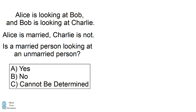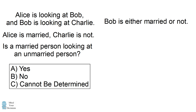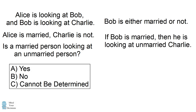Many people think the answer to the first problem is C, cannot be determined. However, we need to work through the logical possibilities. Bob is either married or not married. While we do not know Bob's marital status, we should work out each case to see if the condition is met. One case is that Bob is married. In that case, he is a married person who is looking at Charlie, who is unmarried. So if Bob is married, the condition that a married person is looking at an unmarried person is true.